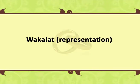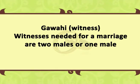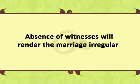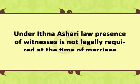Wakalat i.e. representation: those who are competent to contract their own marriage can make ijab or kabul either personally or through a representative. Gawahi i.e. witness: witnesses needed for a marriage are two males or one male and two females. Under Hanafi, Shafi and Ismaili laws, ijab and kabul should be made in the presence and hearing of witnesses, who must be Muslim and competent to contract their own marriage. Absence of witnesses will render the marriage irregular. Under Isna Ashari law, presence of witnesses is not legally required at the time of marriage.